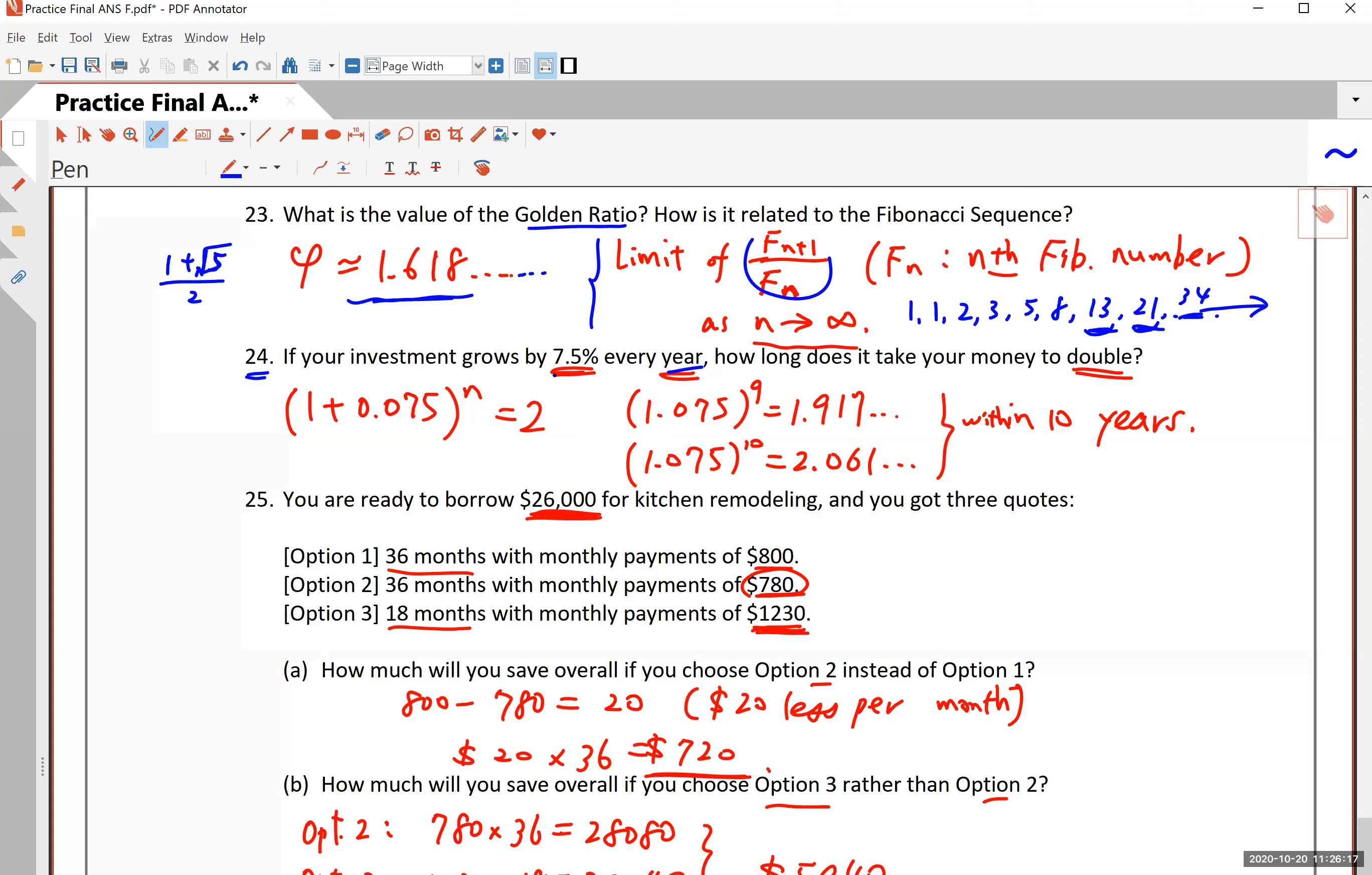So what you can do is write 7.5% as a decimal, which is 0.075. And remember, you add one to it. This is the formula you learn for compound interest annually, or in exponential growth. So it's 1.075 to the nth power. And because you want this money to double, you want to set this equal to two. In other words, if you have $1 and if it grows by 7.5% every year, how long would it take for this $1 to become $2? You get this, right? And try to plug in different numbers.